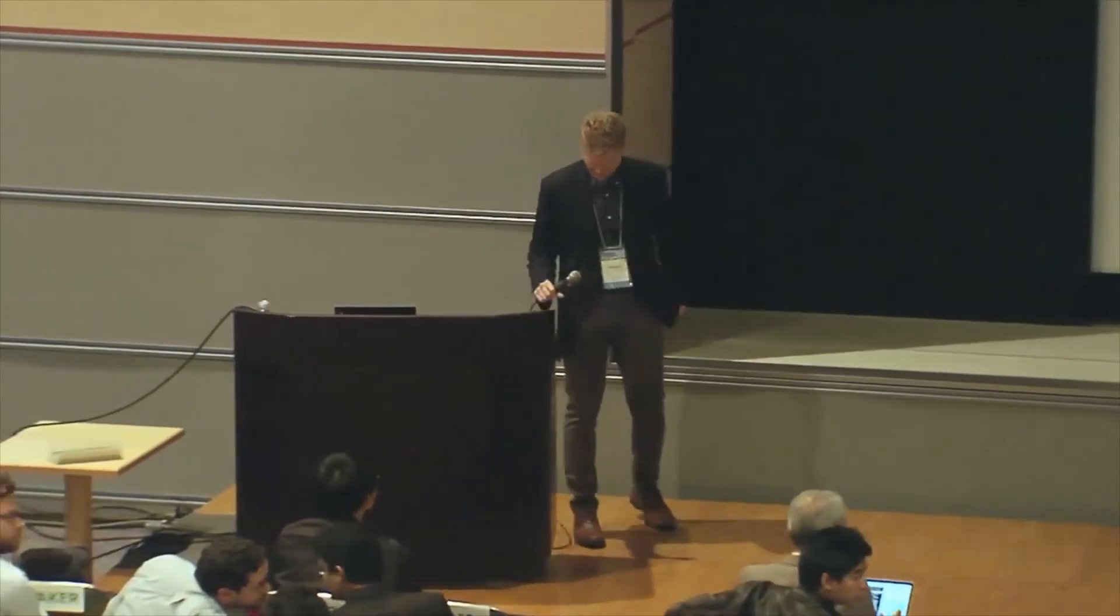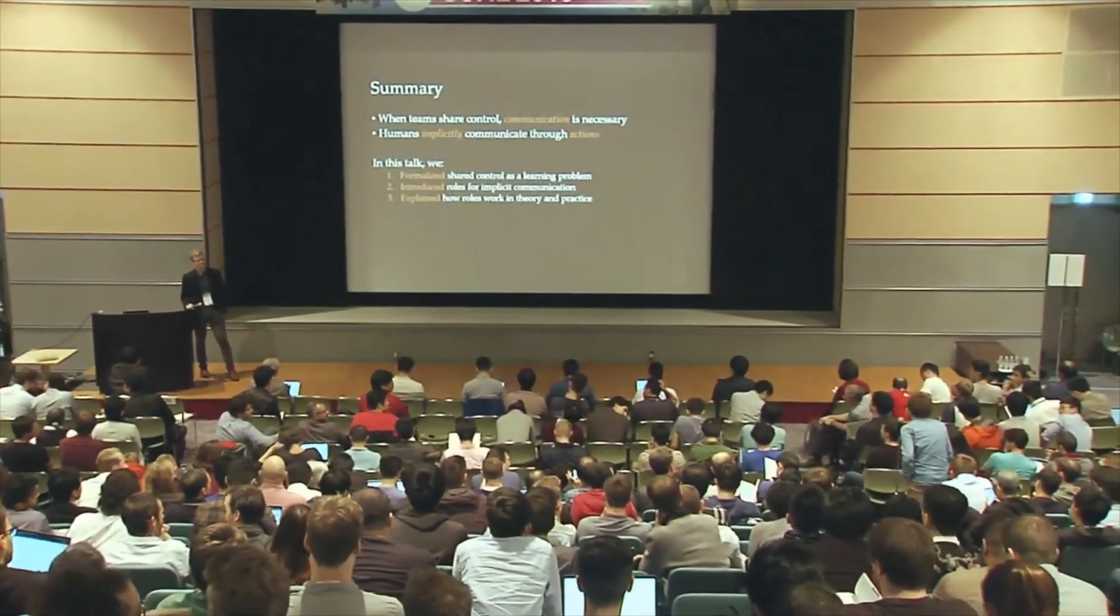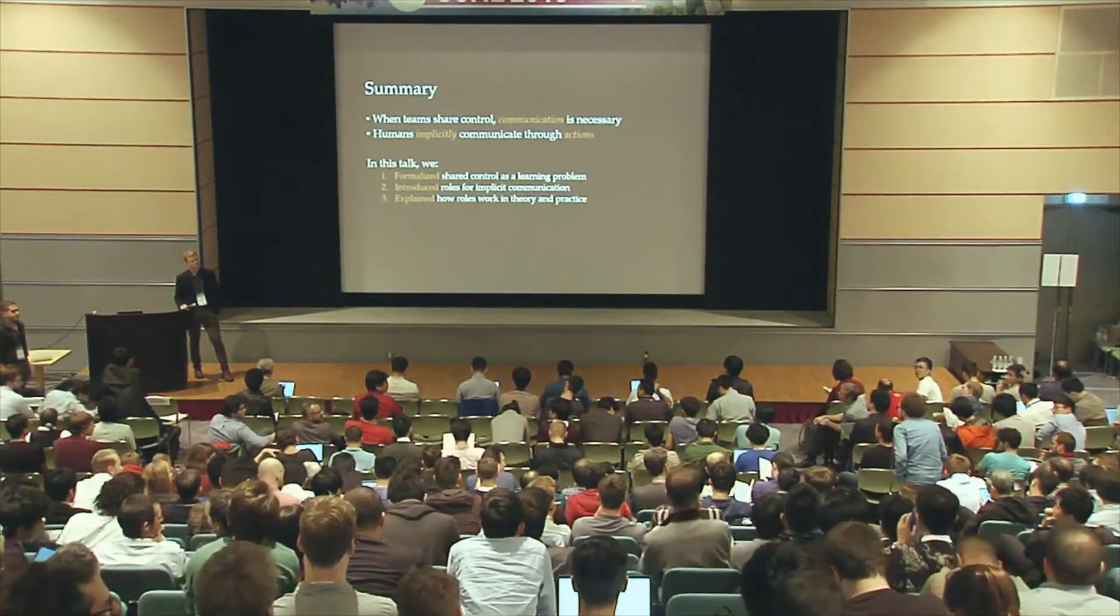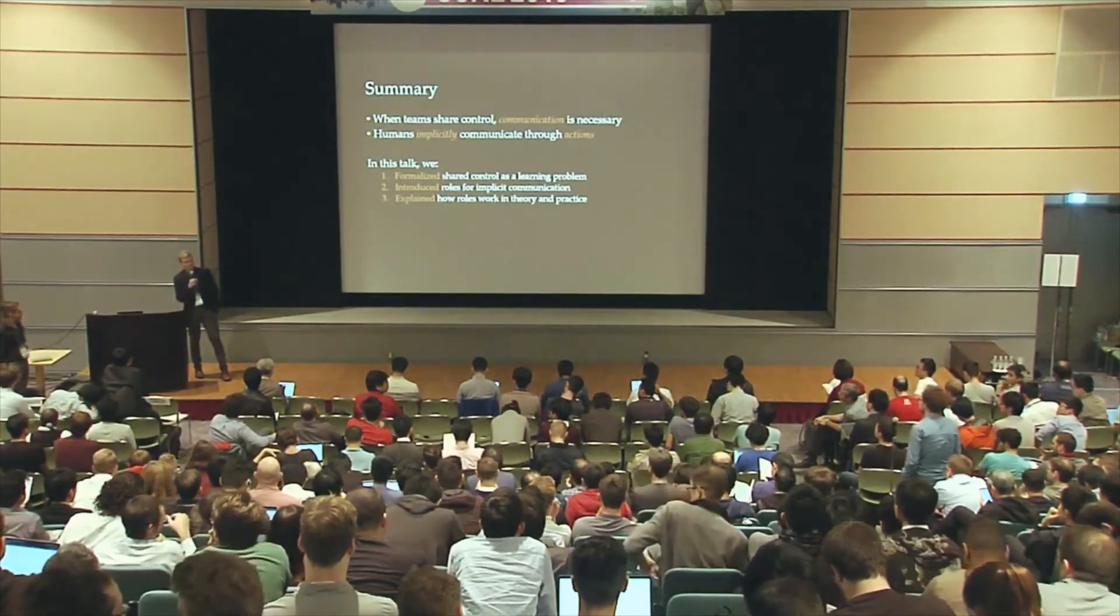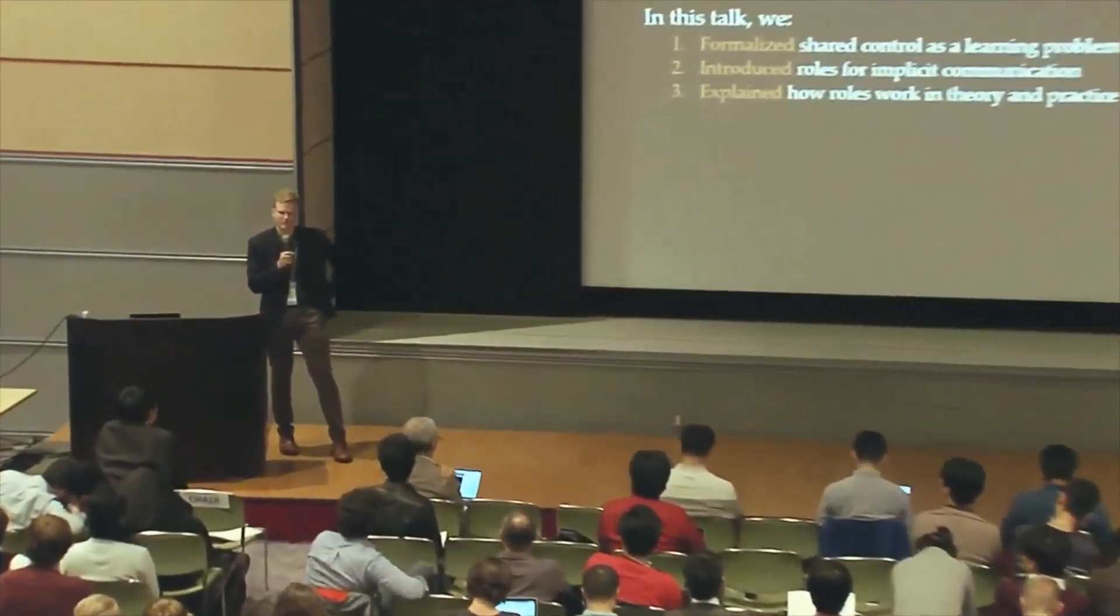So you mentioned you compared explicit communication to this communication through actions. I was wondering how you did the explicit communication, because it would seem you could implement centralized control if you do explicit. Yeah, that's a great question. So you're asking about how we implemented the explicit communication in the simulation I just presented. What we did is we had each agent would send a message to their partner saying, this is the location and the geometry of the nearest obstacle that I see. We compared sending this every time step, every four time steps, so on and so forth.